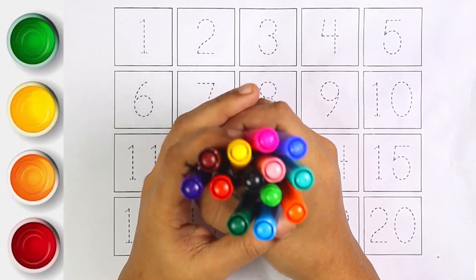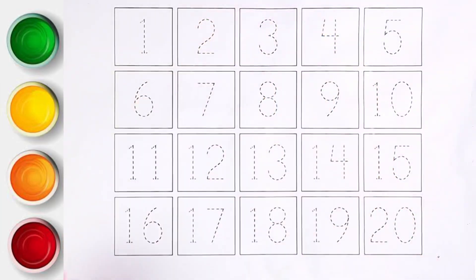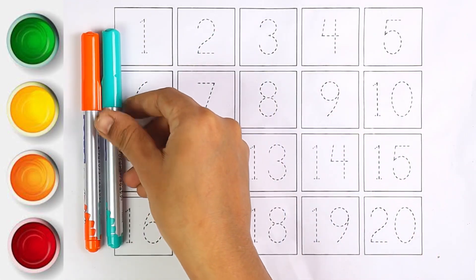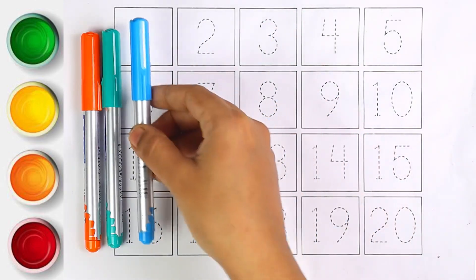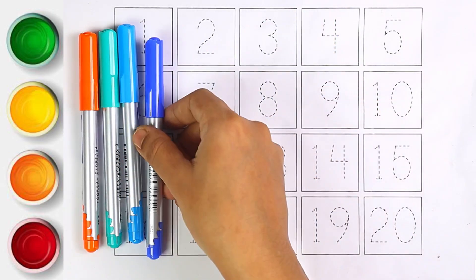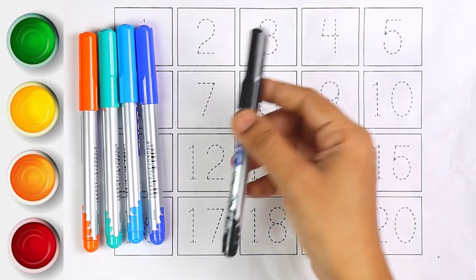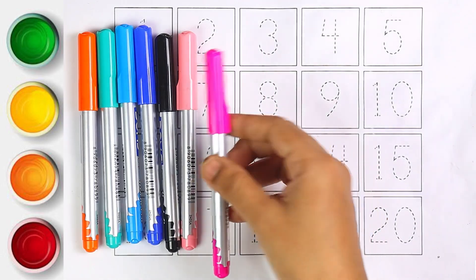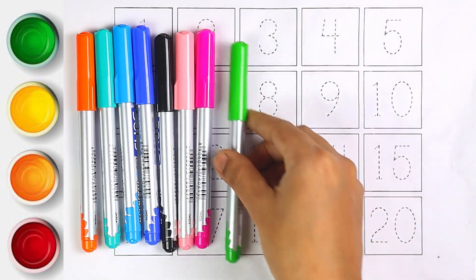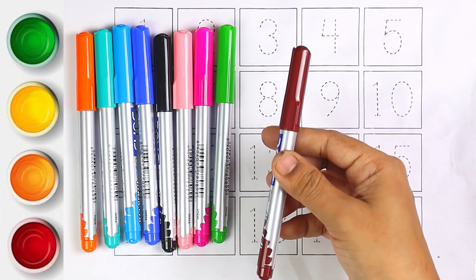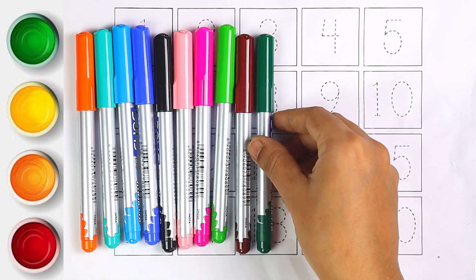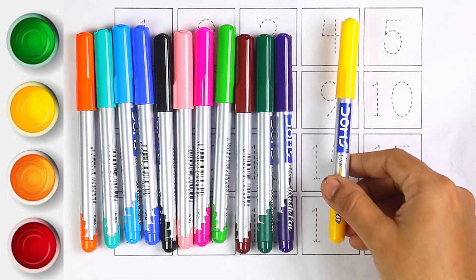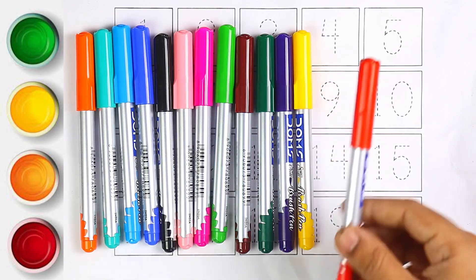Hello kids, welcome to my channel! Let's learn numbers. Let's start with colors: orange, light green, sky blue, blue, black, light pink, pink, brown, dark green, purple, yellow, red color.